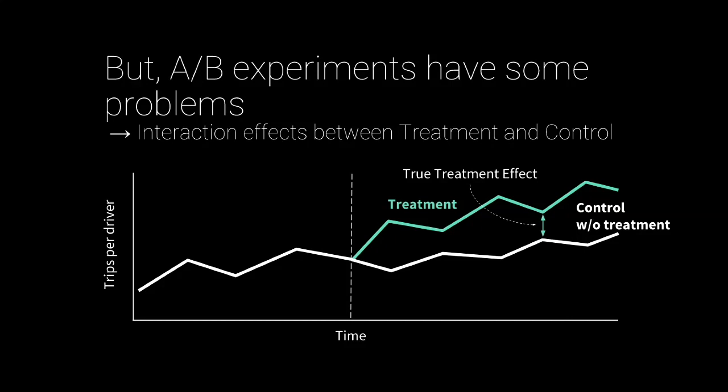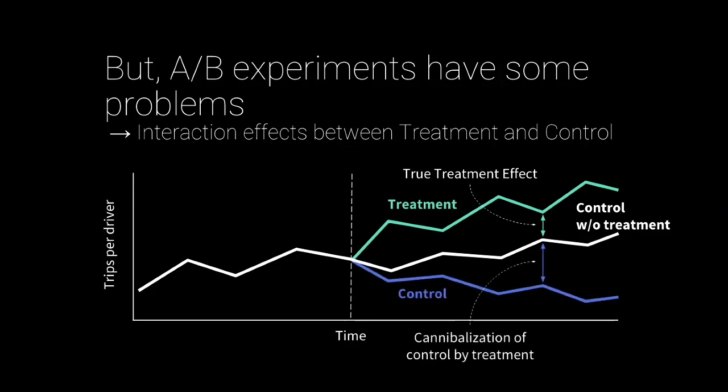For example, say you have a change that increases or decreases the number of drivers on the platform. That will impact our riders as well, because we have a network. And when you impact those riders, those riders will impact other drivers that are not in the treatment cohort. We call this problem cannibalization — when you're trying to isolate the effects of a treatment, you're impacting the other part of the market and not getting the right measurement. With cannibalization, what you end up measuring is the difference between the teal line and the blue line, but what you really want to measure is the distance between the white line and the teal line. This makes it so we cannot simply run an A/B experiment.